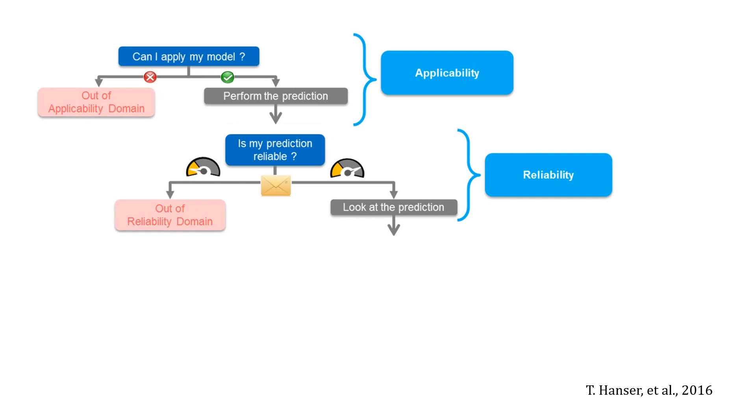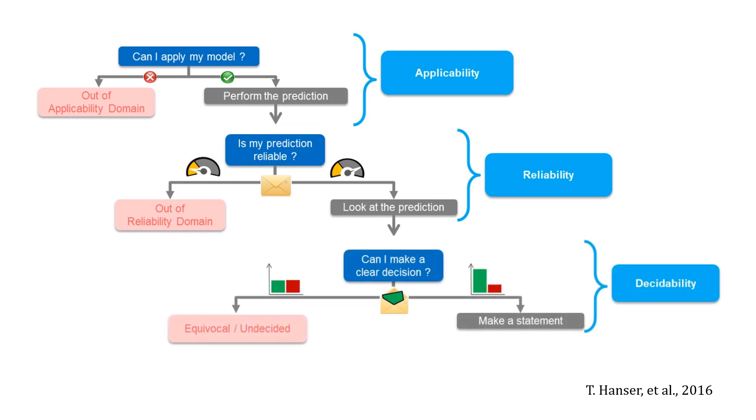Decidability: Can I make a clear decision based on the prediction? What's the distribution of the label of the nearest neighbors?